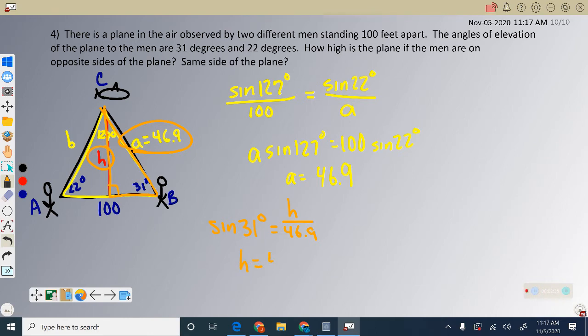So H equals 46.9 times sine of 31 degrees, which gives you 24.2. That's how high the plane is off the ground, a very low flying plane at just 24 feet. If you had found B first, you would have done the exact same steps to solve the problem.